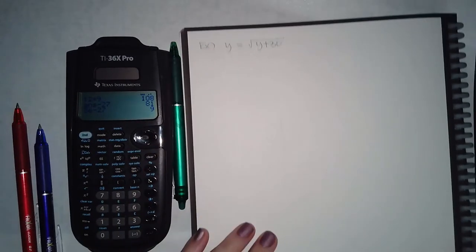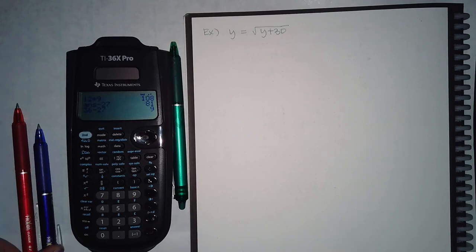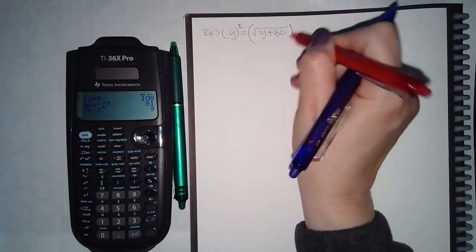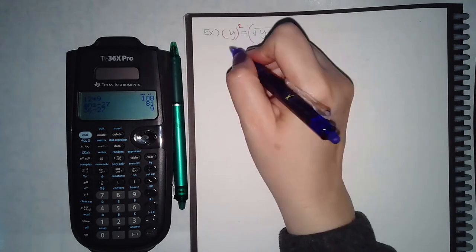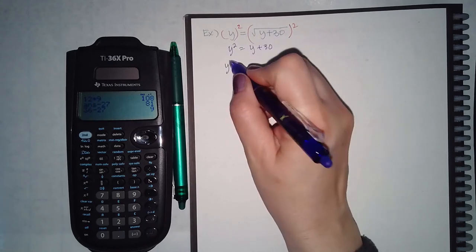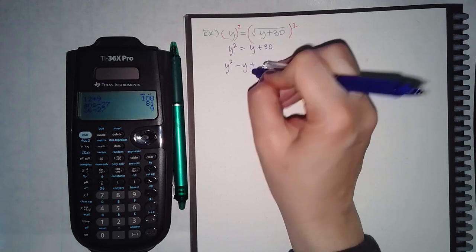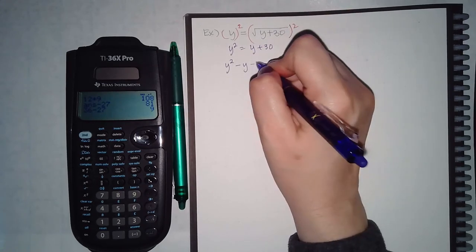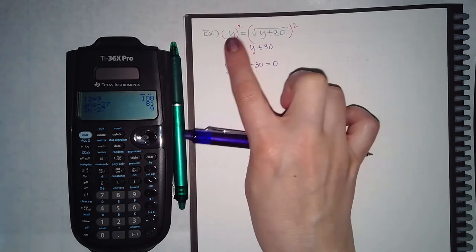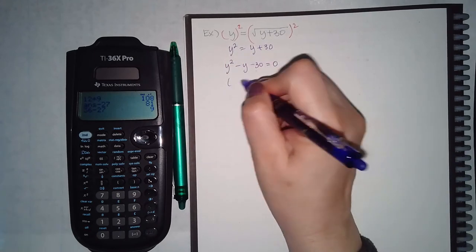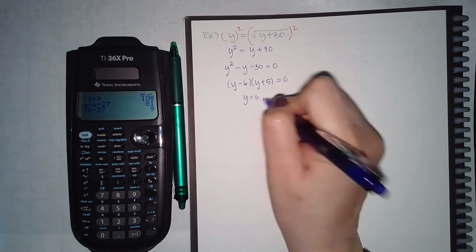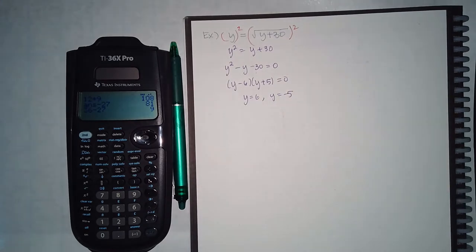Let's try one more example. Same thing here - I have the square root already isolated, so I can square both sides to eliminate it. This becomes y squared, this becomes y plus 30. I do have a square in my equation, so now I want to get everything over to one side. In order for these two terms to travel over that equal sign, I'm going to minus the y over and minus the 30 over. When I factor this, I get y equals 6 and y equals negative 5, and I do have to check both of those answers.